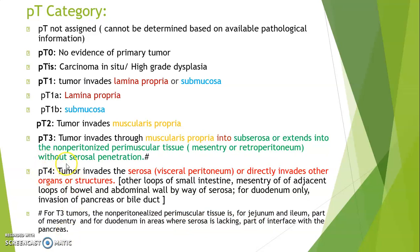PT4 is when tumor invades the serosa or directly invades other organs or structures — including other loops of small intestine, mesentery of adjacent loops of bowel, and abdominal wall by way of serosa. For duodenum, PT4 requires invasion of pancreas or bile duct.